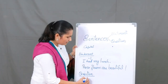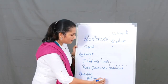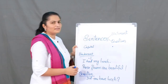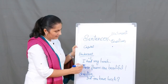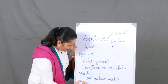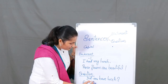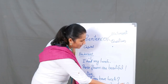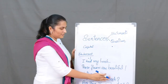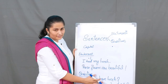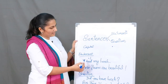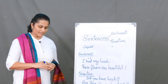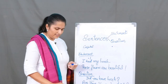Now let's go to question sentences. A question sentence carries a question. For example: 'Did you have lunch?' — at the end of this sentence there is a question mark. A statement sentence has a full stop or period, or an exclamatory mark. A question sentence ends with a question mark — that's the difference between the two.